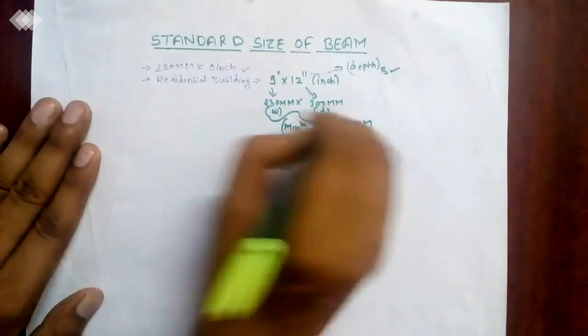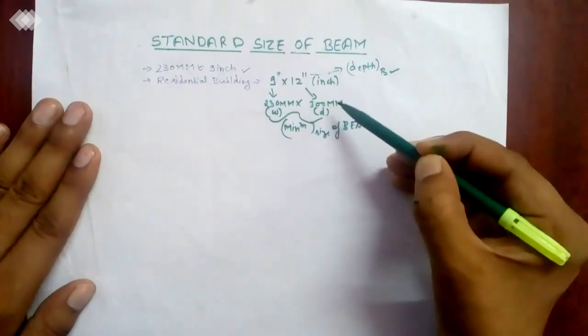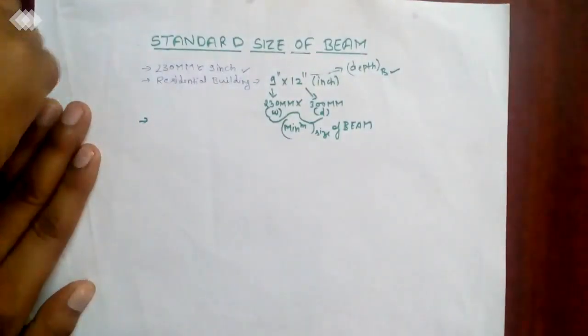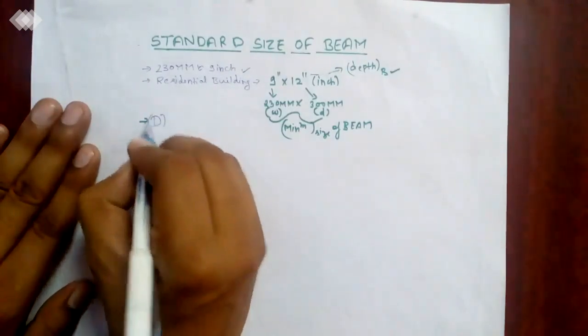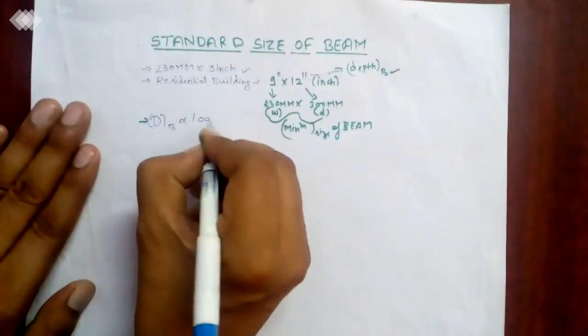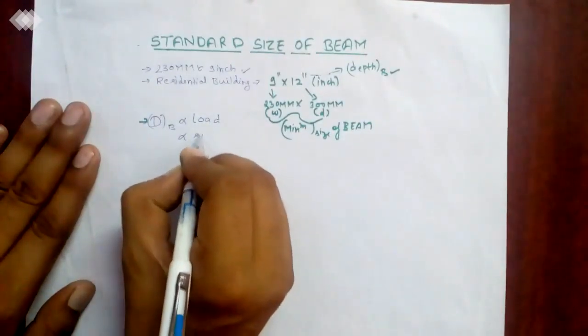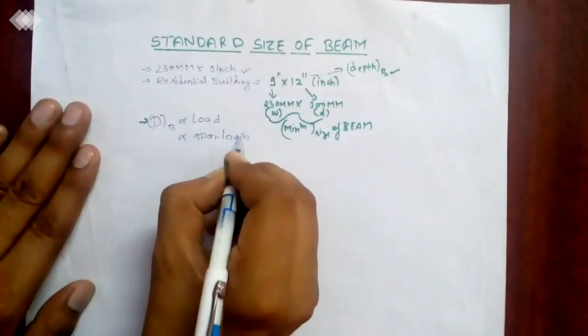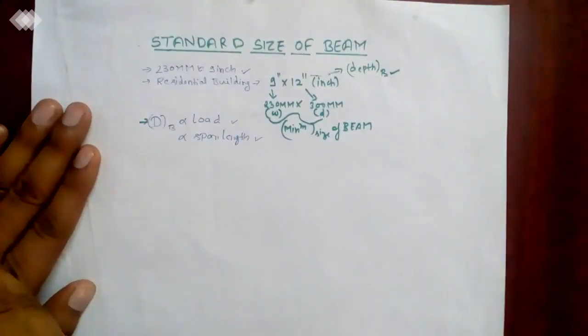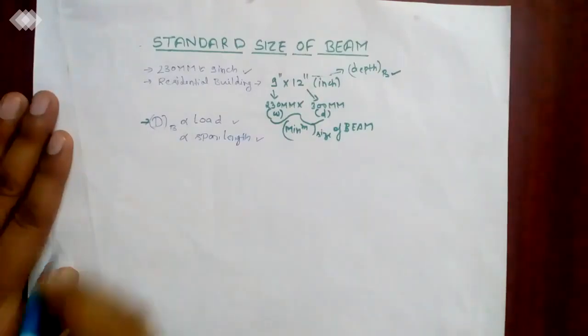This is the minimum size of our beam that is used in residential buildings: width 230 mm and depth 300 mm, that is equivalent to 12 inches. Depth of beam depends on the load coming over it and the length of the span. So there are two factors on which the depth of the beam depends: the load and the span length.